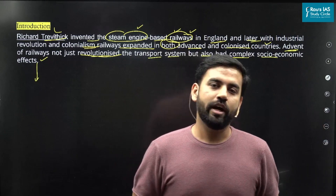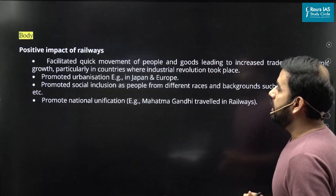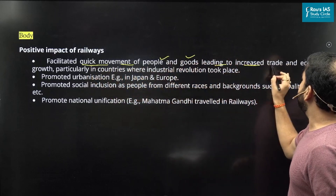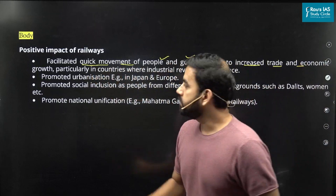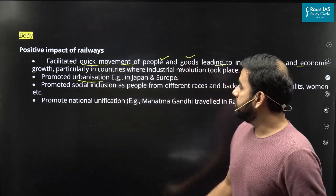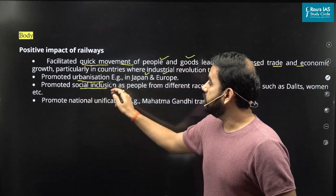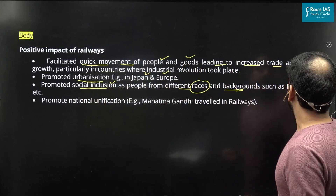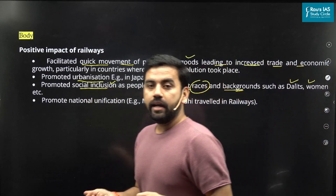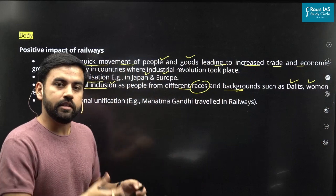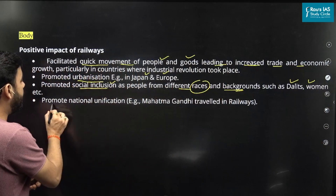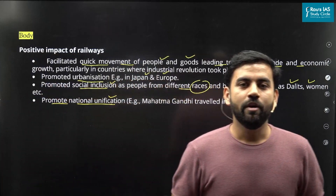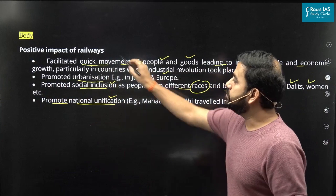In terms of the positive impacts you can write: railways facilitated the quick movement of people and goods, leading to increased trade and economic development. It promoted urbanization — for example in Japan and Europe. It promoted social inclusion, where people from different races and backgrounds such as Dalits, women, and others were able to participate in transportation and communication. And it promoted national unification — for example, Mahatma Gandhi took a national tour using the railways.